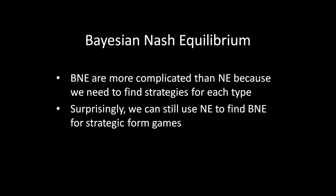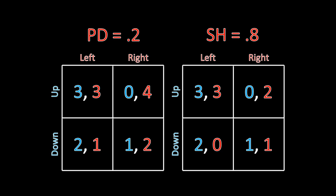To illustrate how we do this, let's look at the following interaction. Here we have two different types of player two and a single type of player one. Player one is facing uncertainty about player two. He doesn't know whether player two is a prisoner's dilemma type or a stag hunt type. With probability 0.2, she's a prisoner's dilemma type and she has prisoner's dilemma payoffs. With probability 0.8, she's a stag hunt type and she has stag hunt payoffs. Regardless of player two's type, player one has stag hunt preferences as well.